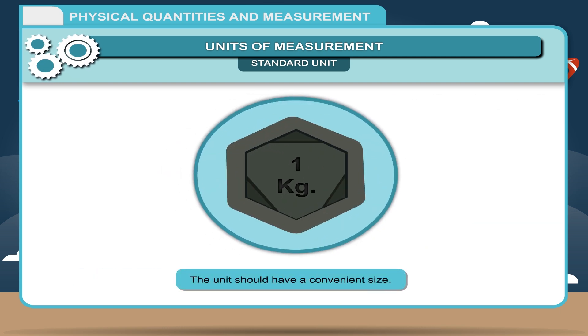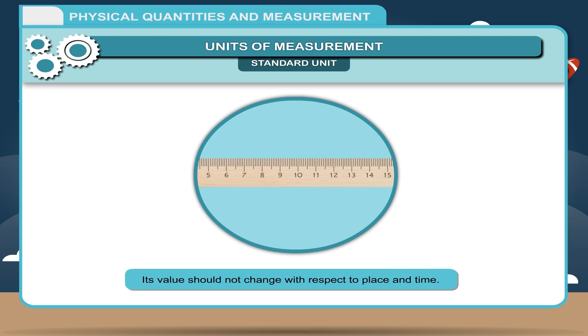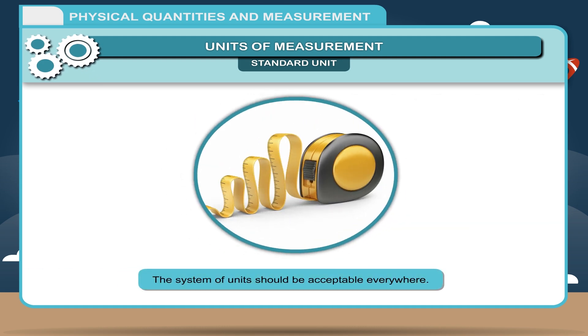It was agreed that the unit of physical quantity should have following characteristics: The unit should have a convenient size. Its value should not change with respect to place and time. The system of units should be acceptable everywhere. It should be well defined.